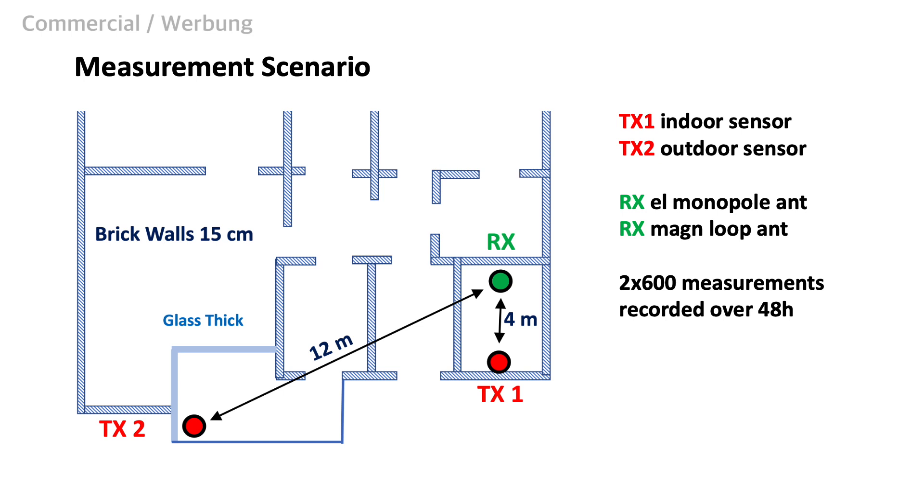In the case of transmitter two, the direct signal will be weak due to the attenuation of several walls. However, there will be plenty of reflected and diffracted signals.